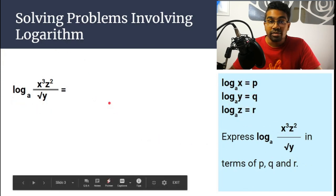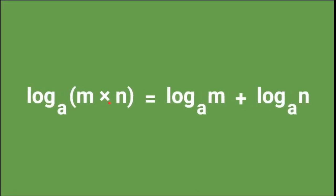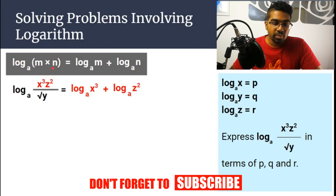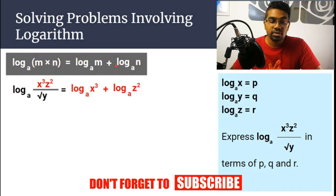So the first rule is when we have multiplication in the log, let's say log_a(m × n), then we can separate it as an addition of the logs. So this will become log_a(m) + log_a(n). Let's look at our question. On top here at the numerator we have x³ multiplied by z². Then we can separate it as log_a(x³) + log_a(z²).